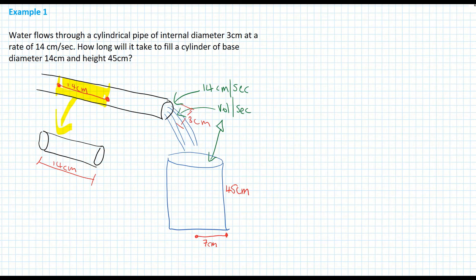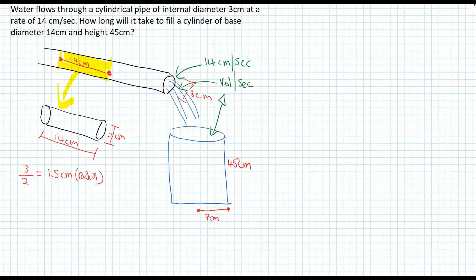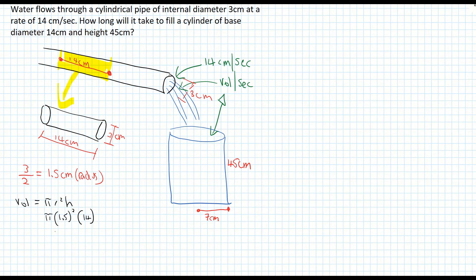That small section has a diameter of 3 centimetres, so a radius of 3 divided by 2, which is 1.5 centimetres. Using the volume formula from the log tables — volume equals pi r squared h — and multiplying out, I get 31.5 pi centimetres cubed. Turning that into a decimal gives approximately 98.96 centimetres cubed. So every second, 98.96 centimetres cubed of water flows out.